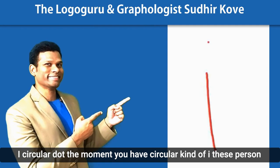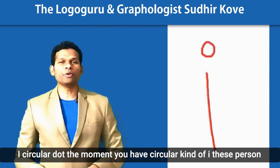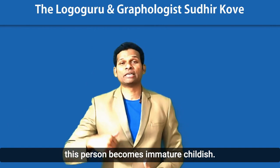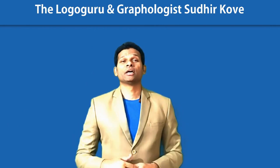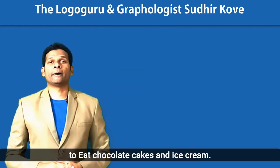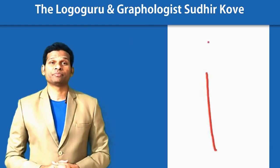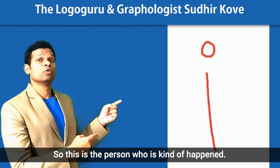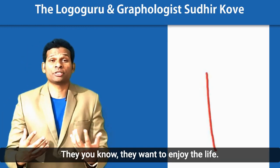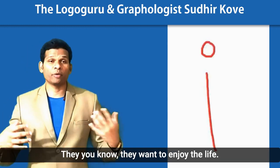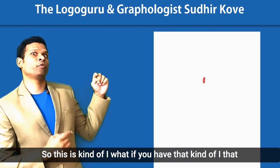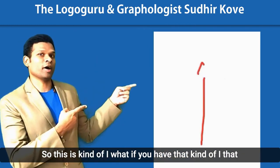Now, what about the shapes? If you have a circular i-dot, the moment you have a circular kind of dot, this person becomes childish. This person is attention-seeking, they want to eat chocolate cakes and ice cream. They seek attention, they want to enjoy life.